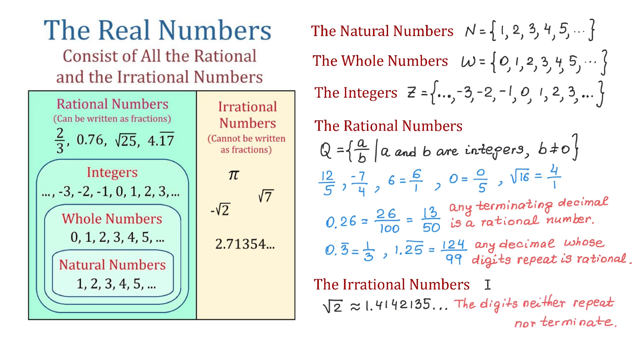In fact, the square root of any non-perfect square will be an irrational number. So square root of 5, square root of 6, square root of 7 are all irrational numbers.